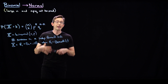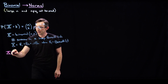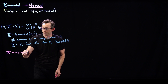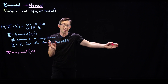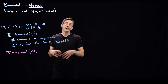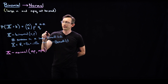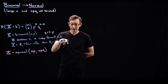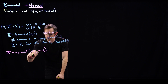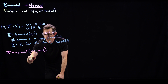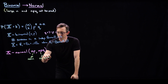In the limit of large n, this converges to the normal distribution. X is distributed as a normal random variable where the mean is n times p — the expected number of successes. And this has a variance of n times p times q, where q equals one minus p. So mu equals n*p and sigma squared equals n*p*q.